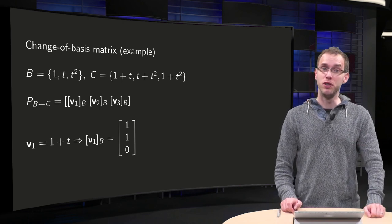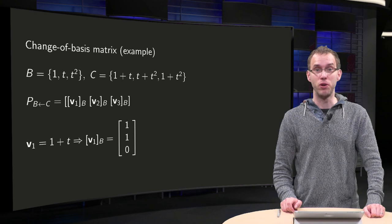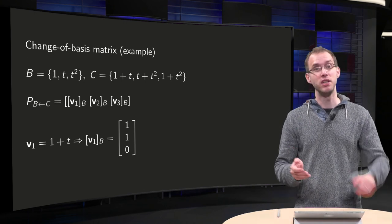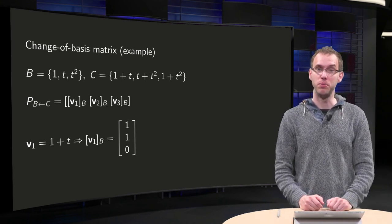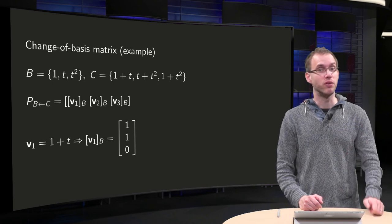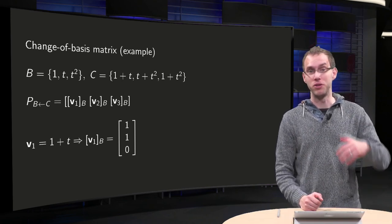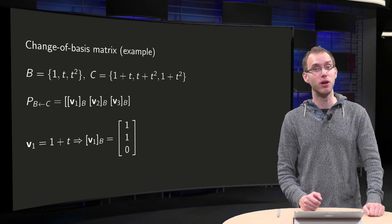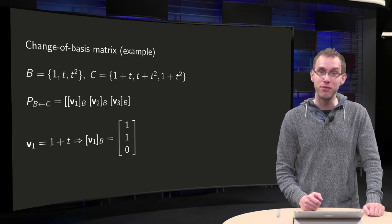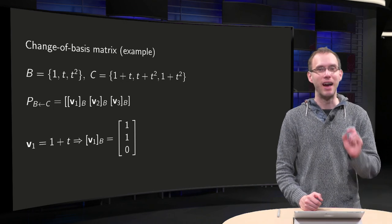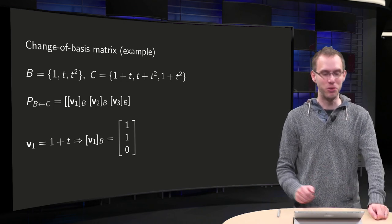In the following examples we need to determine both the change of coordinate matrices from B to C and vice versa from C to B. We can choose which one we do first. We pick the easiest one of course, because if we have one we can determine the other by just taking the inverse matrix of the first one, and that is exactly what we are going to do.